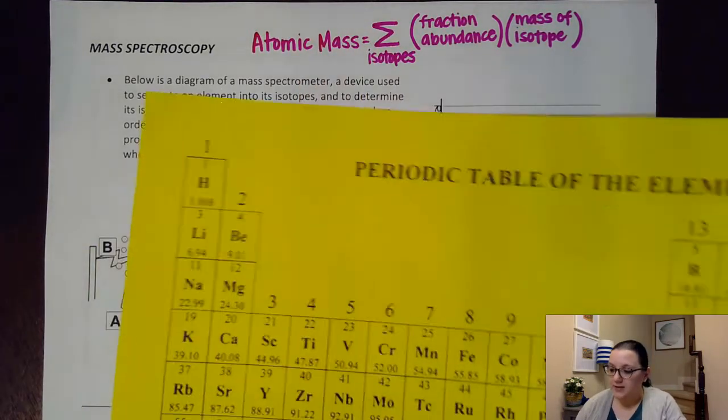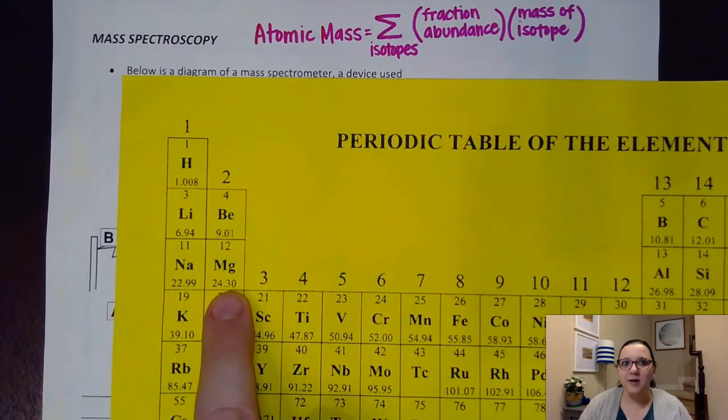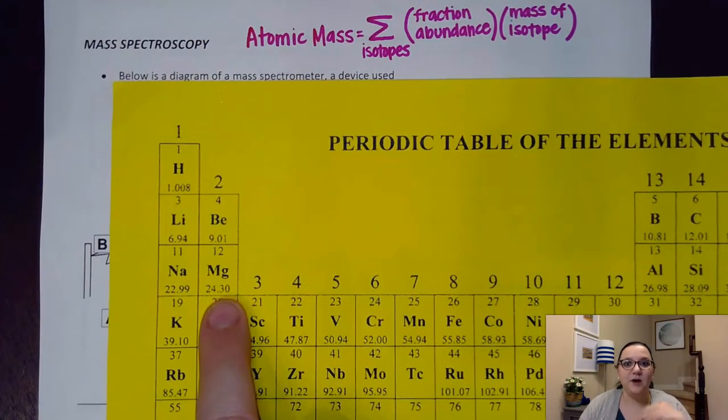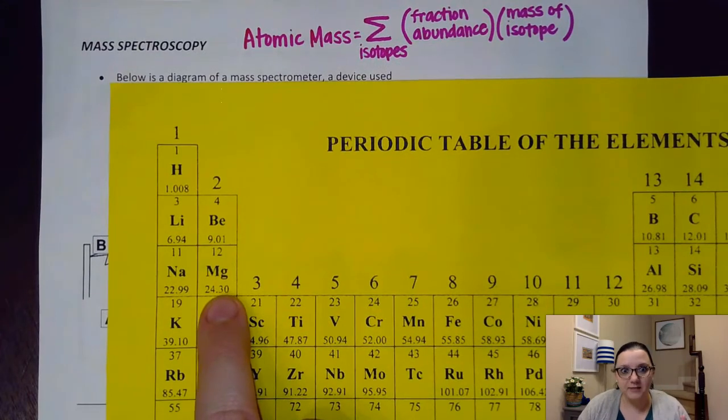For example, for magnesium, they've taken samples of magnesium from all over the Earth, analyzed it to figure out what isotopes are present, what the masses are, what the fraction abundances would be, and then they've taken that weighted average and obtained it to be 24.30.